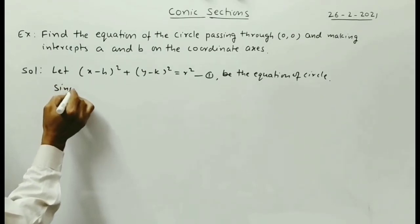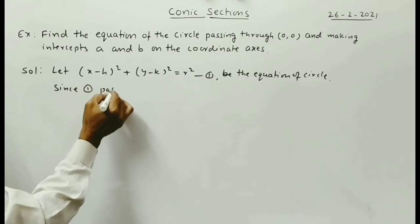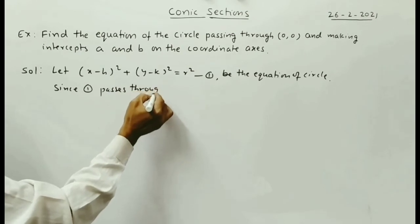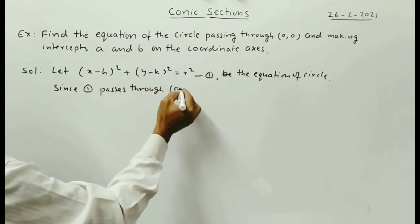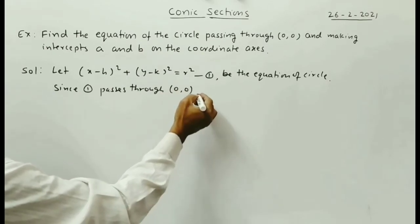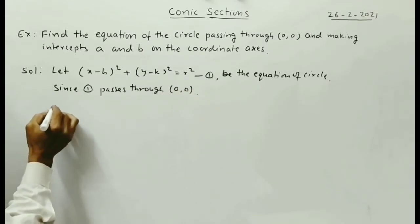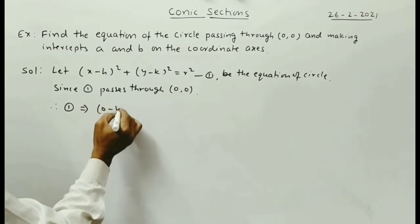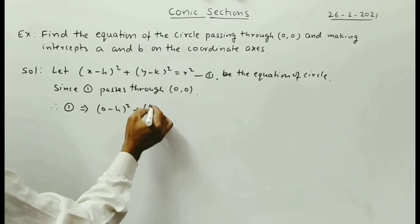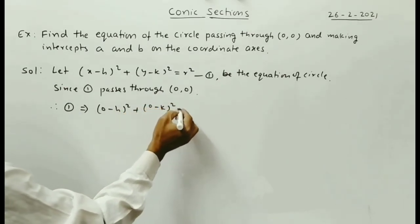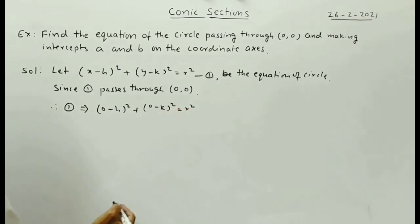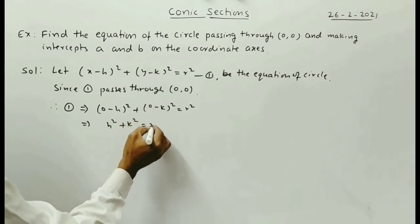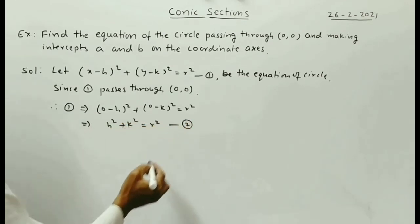Since circle (1) passes through the origin, therefore equation (1) implies (0 − h)² + (0 − k)² = r², which gives h² + k² = r². Call this equation (2).